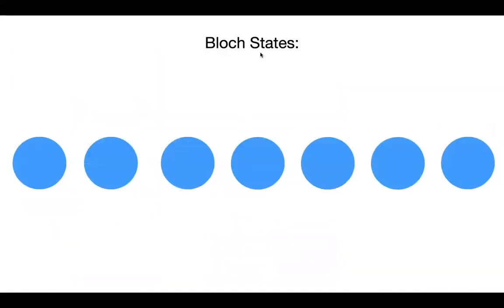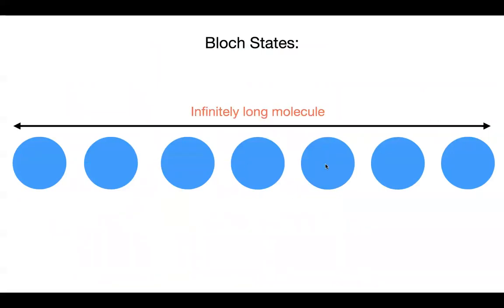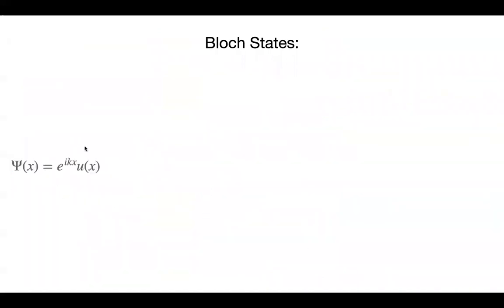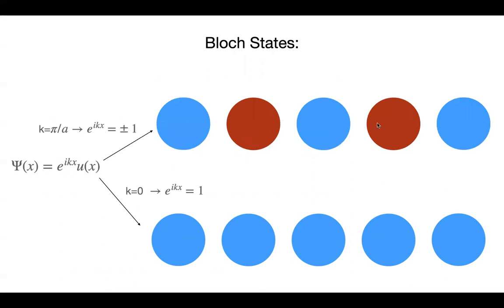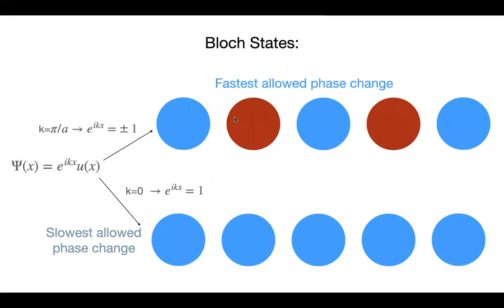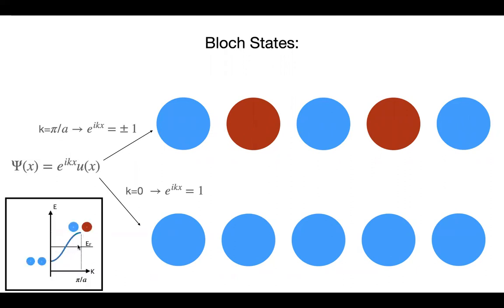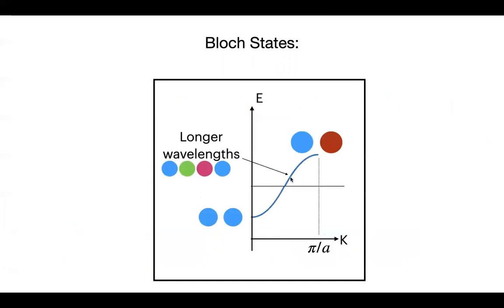If we think of Bloch states on a 1D chain, we can think of them as something similar but for an infinitely long molecule. You have the fully bonding state at k=0, and the antibonding-like state at k=π/a. Without symmetry breaking, these aren't the molecular orbitals we're talking about. The slowest allowed phase change is here, while the fastest is at k=π/a — you can't go faster than changing sign every atom. Plotting the band structure: lowest energy at k=0, highest energy at k=π/a, where a is the distance between atoms.